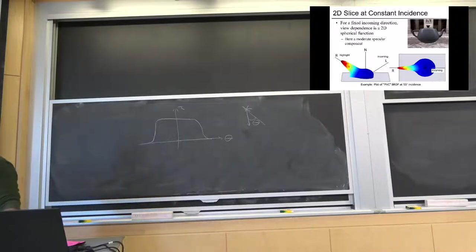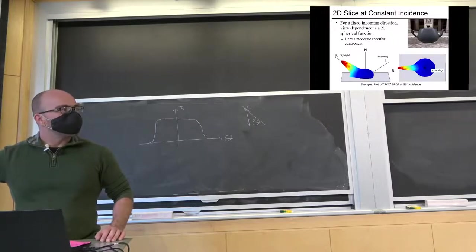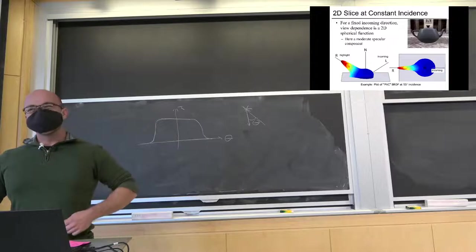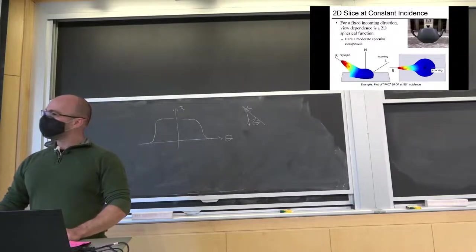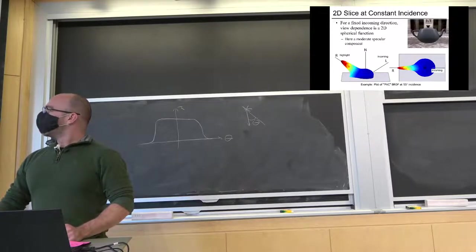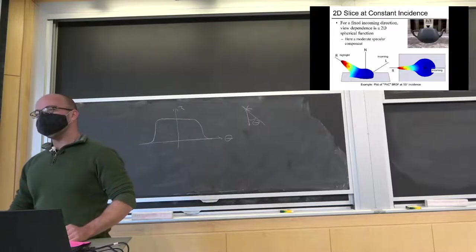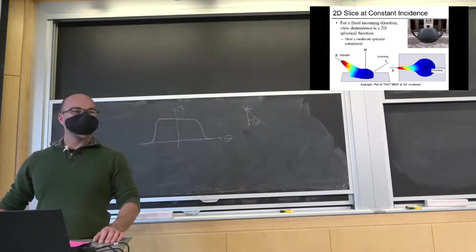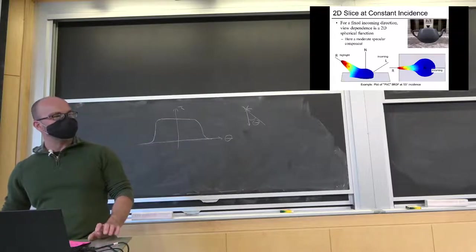A retro-reflective material might actually have the lobe pointing back in the same direction it came from, which is totally bizarre. The color in the visualization is the same as the height — just two different expressions of the same thing. R here stands for reflection. The visualization also shows some light reflecting down below — in this BRDF, there's a very specular lobe and also a Lambertian component: some amount is just getting reflected everywhere. The BRDF visualization only shows one slice; the full BRDF is a function of both incoming and outgoing direction.